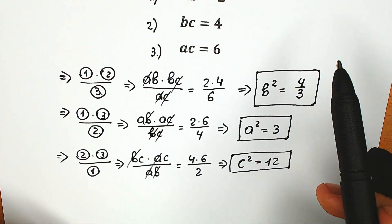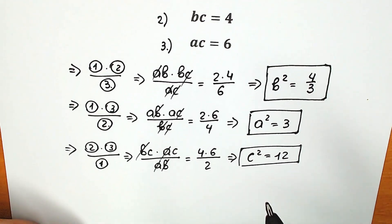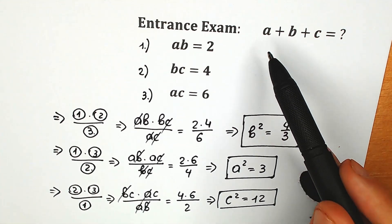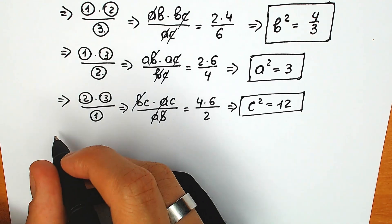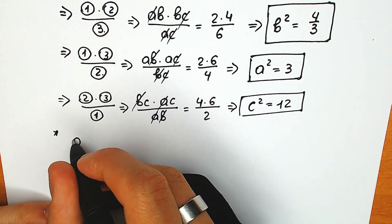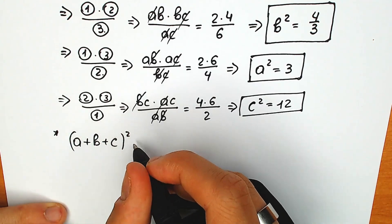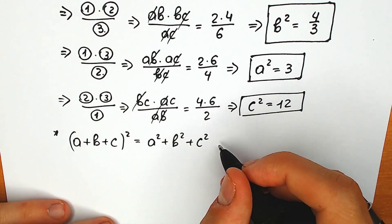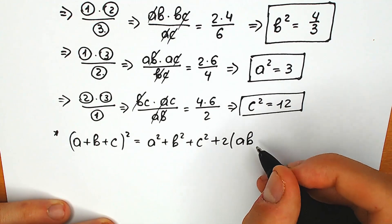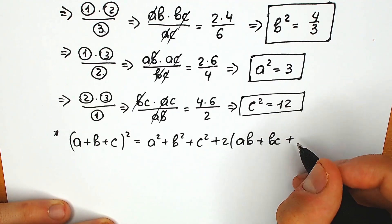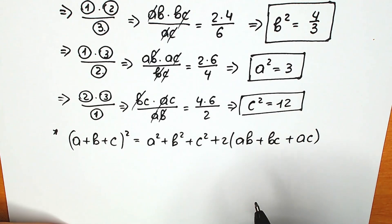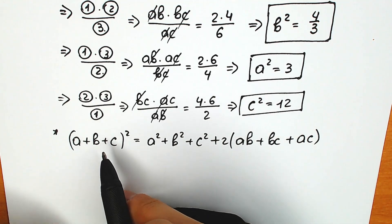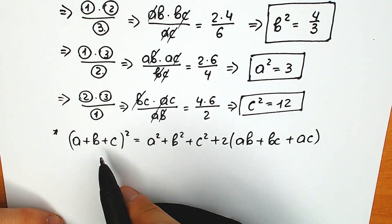That is really great. Keep in mind we need to find a plus b plus c. Right now we need to find out which algebraic formula to use. We know the squares, and we need to find a plus b plus c. The really important formula is: a plus b plus c, squared, equals a squared plus b squared plus c squared, plus 2 times the quantity ab plus bc plus ac.